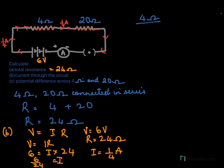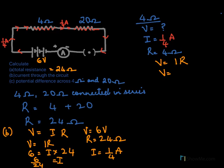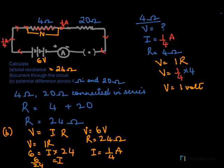For the 4 ohm resistor, the current flowing through it is 1/4 amperes and the resistance is 4 ohms. Using Ohm's law, V equals I times R equals (1/4) times 4, so the voltage across the 4 ohm resistor is 1 volt.